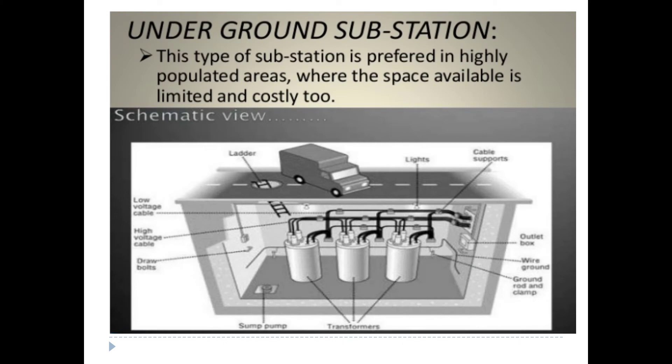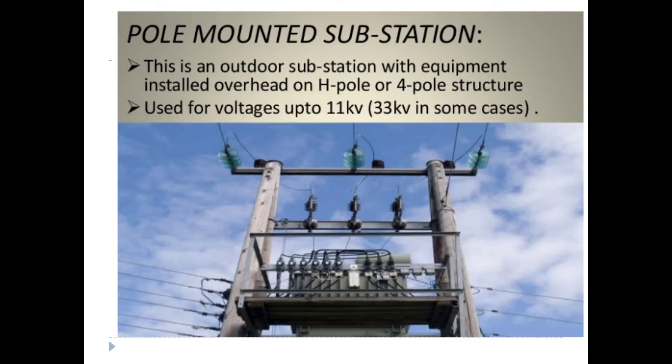The Underground Substation is used in highly populated areas where space is limited. It is also costly. The Pole Mounted Substation is an outdoor one where the equipment is installed overhead on a four-pole structure. The voltage is up to 11 kV or 33 kV.